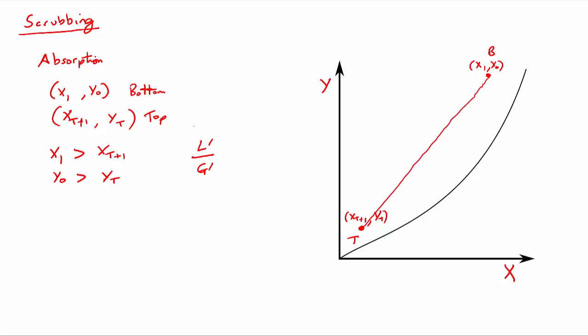We can then do exactly what we would do in the McCabe-Thiele method — start at the top of our column, step across to the equilibrium line, then up to our operating line, then across to the equilibrium line, and then up to our operating line, continuing until we exceed the required composition. In this case we would count one, two, three stages in our scrubbing system.